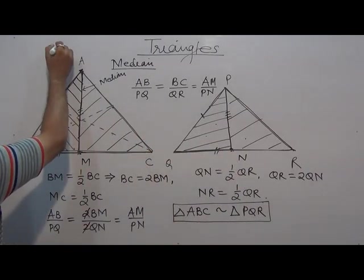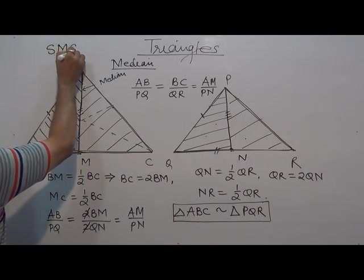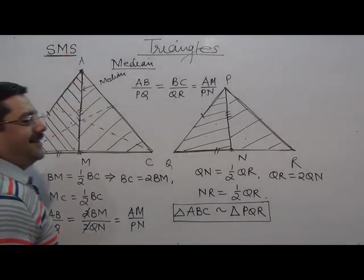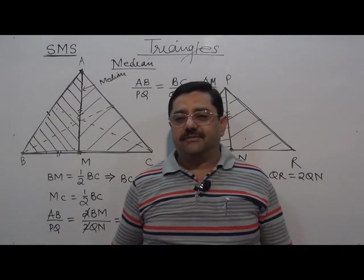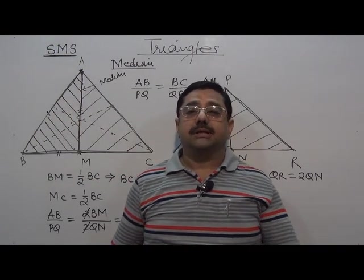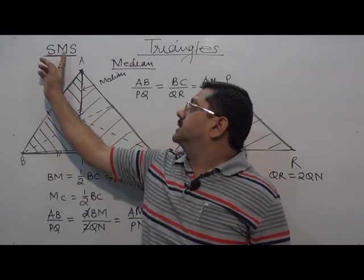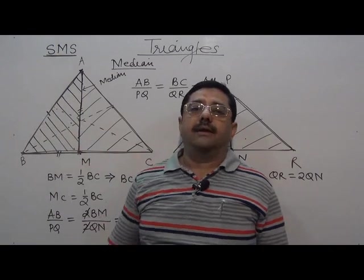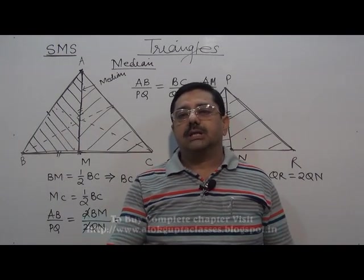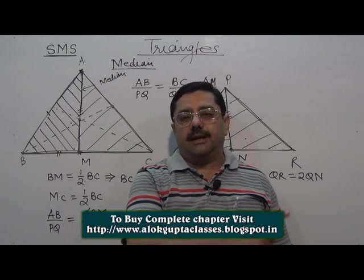This criteria, this criteria: side, median, side. This I have told from my side for solving further questions, that for a triangle, if there are sides - two sides and one median - if they are proportional, the two triangles are said to be similar.